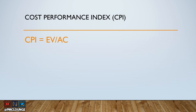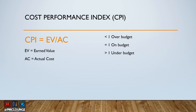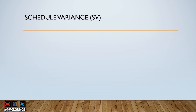Cost Performance Index, or CPI: CPI equals EV divided by AC, where EV is Earned Value and AC is Actual Cost. If the answer is less than one, you are over budget — bad news. If it equals one, you are on budget. If it is greater than one, you are under budget, meaning you are spending less money than planned.